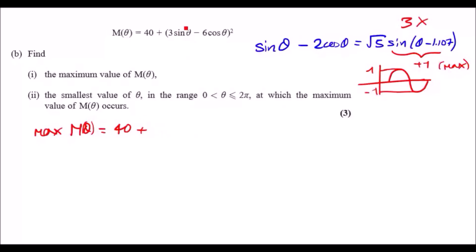Remember the constants are always the same, so instead of 3 sin blah blah, it's going to be 3 times the right hand side. So it would be bracket 3√5, instead of trying sine, the maximum value of sine is 1, all squared.